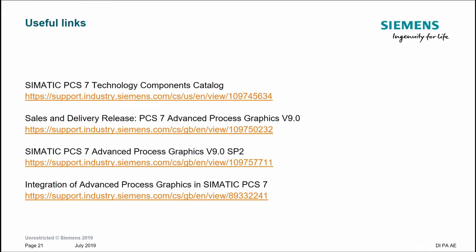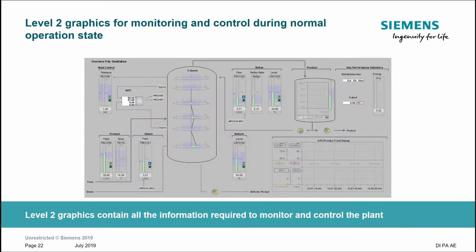Returning to the slides, here is a summary of that information: a link to the technology catalog, a link to the release information about APG version 9, and a service pack link. If you order APG, you'll receive version 9 and then need to download the service pack to bring the system fully up to date. There's also the link to the application note. Now it's time to look at the product live.